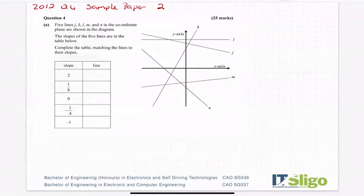And the same with J and N. N has a much bigger negative slope than J because it's much steeper. And then L is a straight line. It has no slope, no slant. So that has a slope of zero.